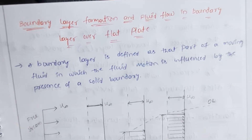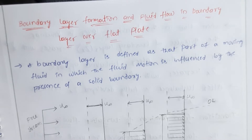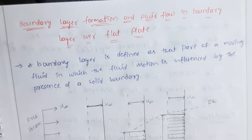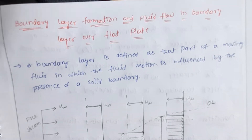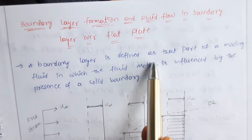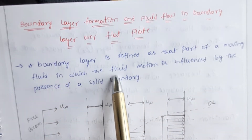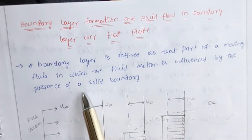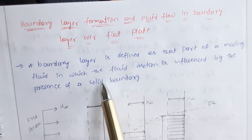The previous problem I discussed was boundary layer formation in tubes. This problem is related to boundary layer formation over a flat plate and how the flow in the boundary layer behaves. The boundary layer is defined as the part of the moving fluid in which the fluid motion is influenced by the presence of the solid boundary — here the solid is the flat plate.